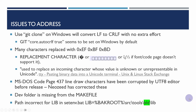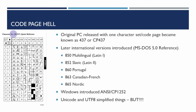Let me highlight the code page hell. Those of us of a certain age will be aware of DLL hell and also code page hell. The original PC when it was released only had one character set or code page. This is one of the pages out of the original IBM 5150 technical guide, showing the top 128 characters. IBM chose a number of accented and foreign characters and also included line draw and box draw characters — a lot of the text files in the MS-DOS 4 release make use of these.